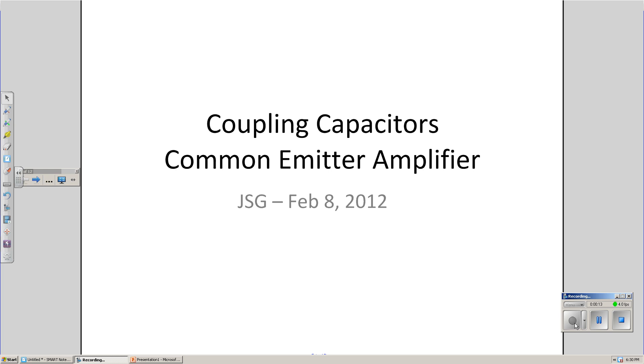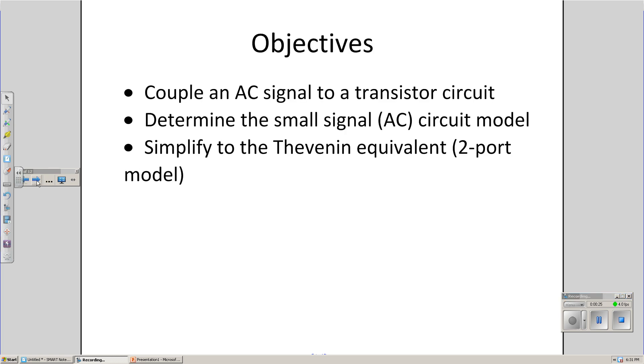That's what coupling capacitors are used for, and the amplifier we're going to first look at is a common emitter amplifier, kind of the bread and butter amplifier for most amplifier circuits. The objective here is to couple an AC signal to the previous transistor circuit that we designed, determine the small signal or AC circuit model for that circuit, and then simplify to find the Thevenin equivalent, also known as the two-port model, for the resulting amplifier.